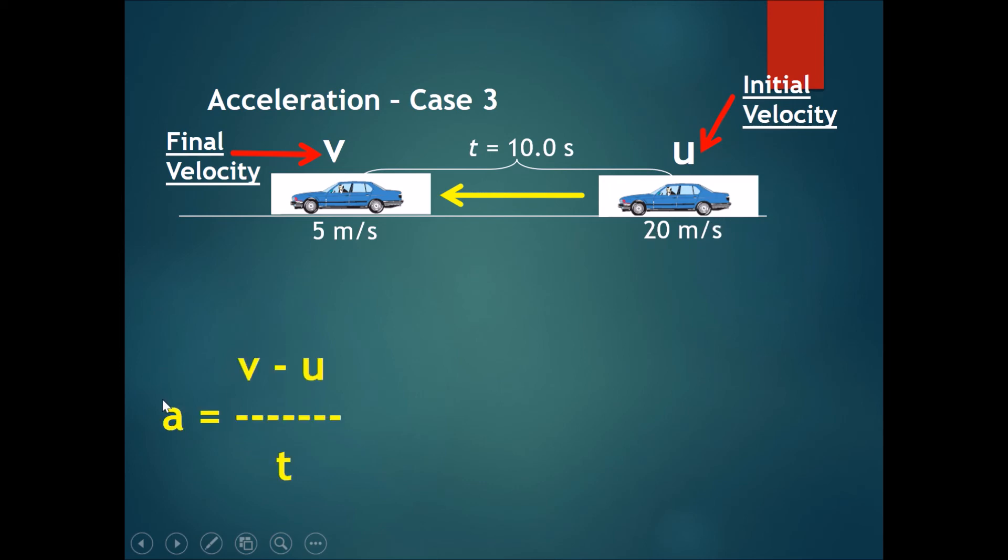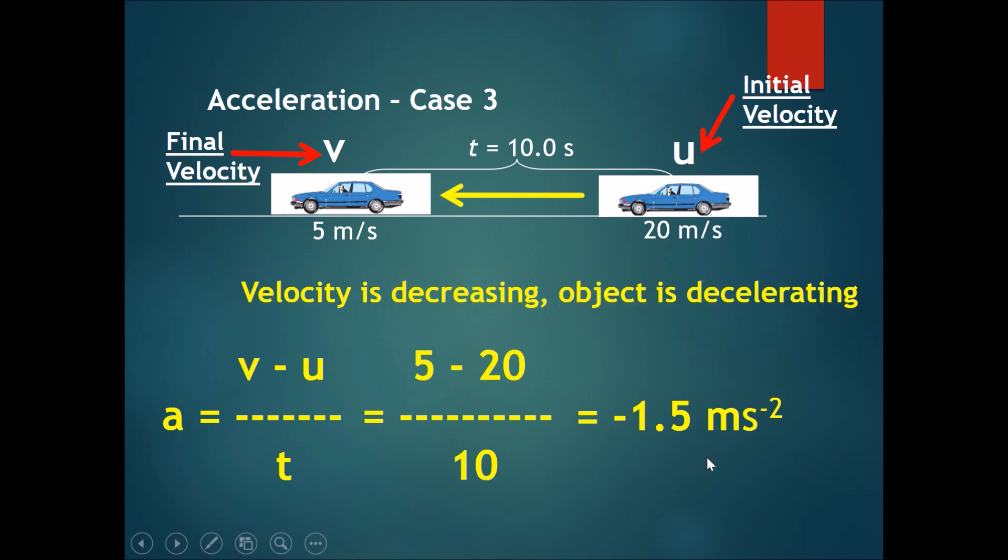Let's sub it in. Acceleration is equal to V minus u over t. And therefore, the final speed is 5 minus the initial speed of 20. Divide this by 10. And you should get a negative 1.5 meters per second squared. So this is shown that acceleration can also be negative. Velocity is decreasing and therefore, the object is decelerating.